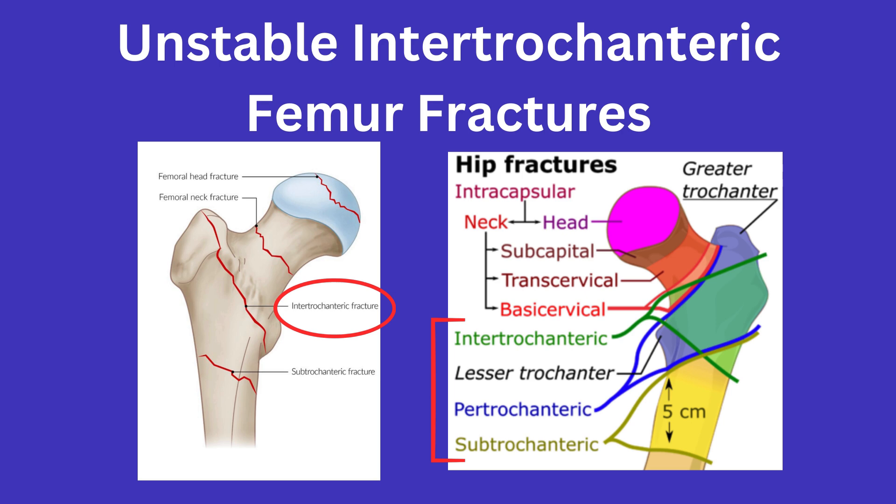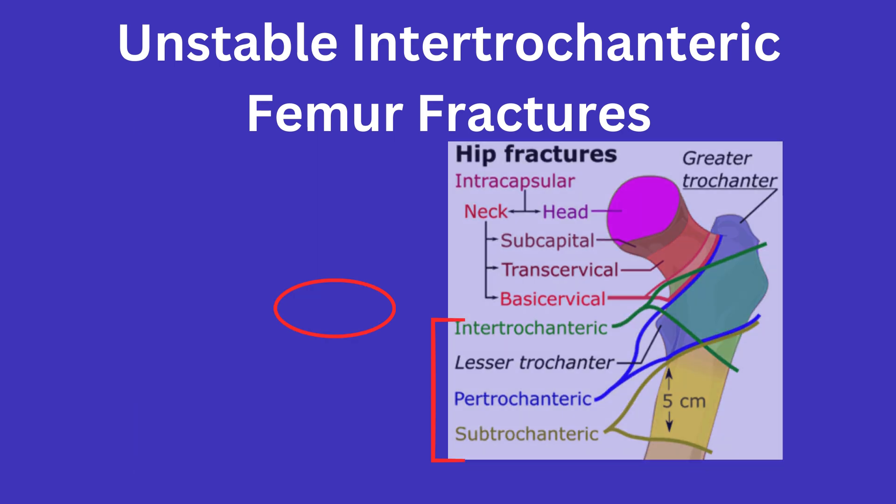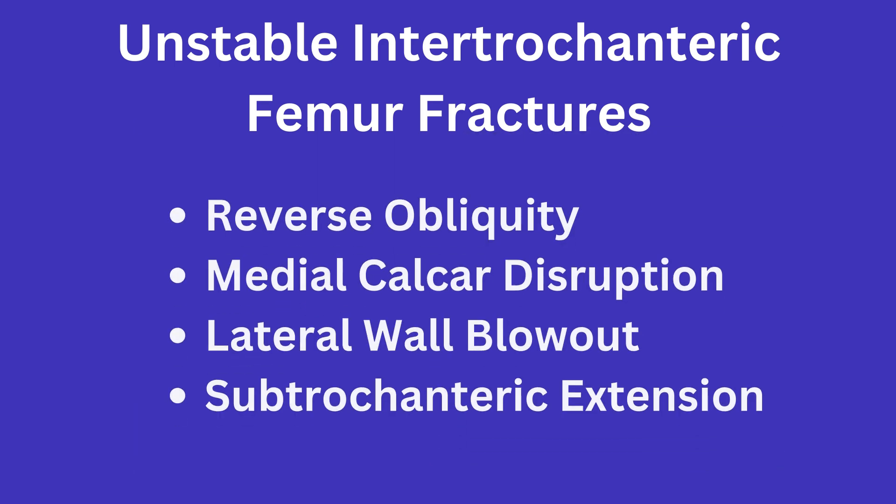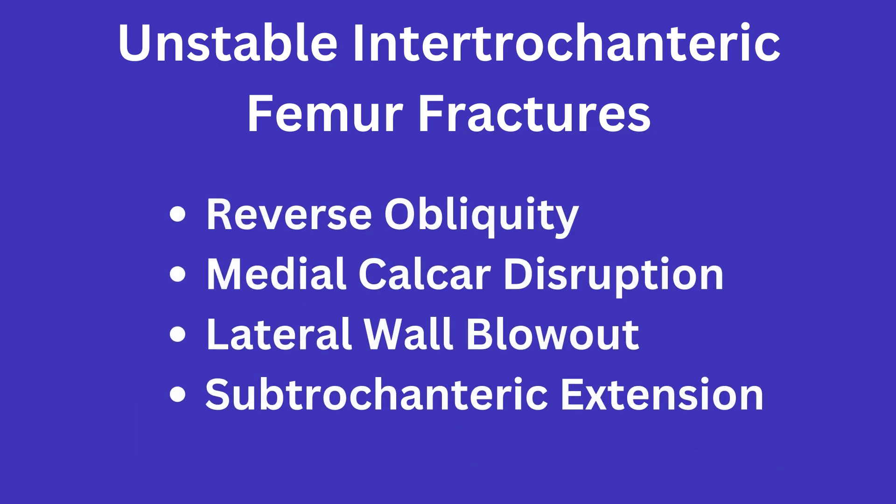There are four key concepts you will want to name if asked what makes an intertrochanteric fracture unstable. These include if it has reverse obliquity, medial calcar disruption, lateral wall blowout, and subtrochanteric extension.